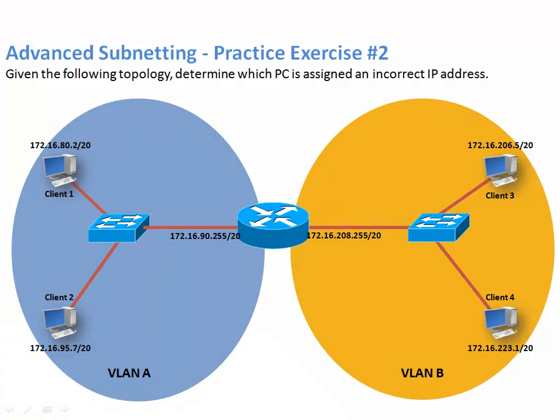I've got one more exercise for you. We want to make sure that four clients have appropriate IP addressing — in fact, we're told one doesn't, so this is a troubleshooting exercise. We're taking a class B network of 172.16.0.0/16 and subnetting it with a slash 20 subnet mask — that means four borrowed bits. Two to the fourth power is 16, so there are 16 potential subnets and we're using two of those on screen. Determine which client does not live in the appropriate subnet for its VLAN. You might want to pause the video and come back to check the answers.